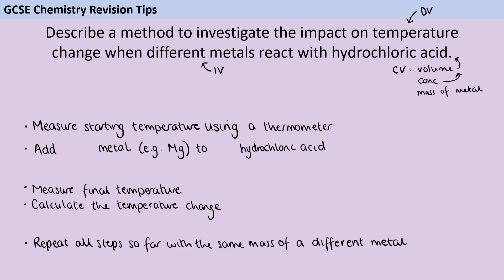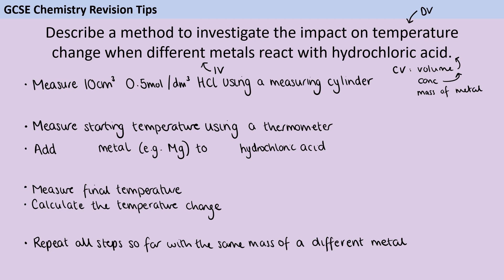At the end of this, I'm going to need to repeat it with different metals so that I can compare the impact on the temperature change — that covers my independent variable and dependent variable. To start with, I'm going to measure out a set volume of acid. I find it easier to just name a specific volume rather than saying 'use the same volume', and likewise I've just stated the concentration rather than saying 'same concentration'. I've also named the equipment I'm using to do this.